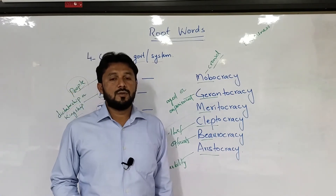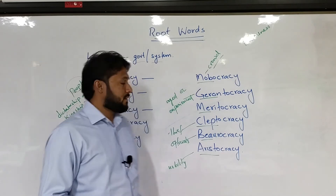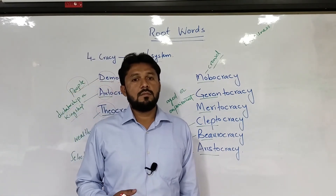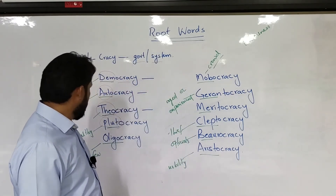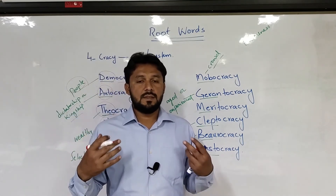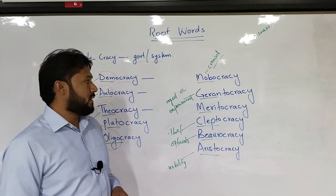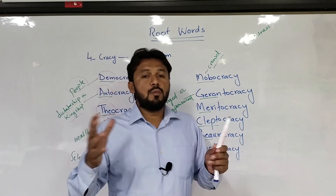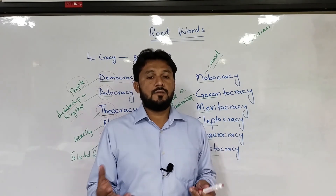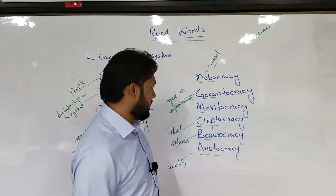'Theocracy' — 'theo' means religion, so theocracy means government run by religion or a religious person. 'Plutocracy' — 'pluto' means wealthy person, so government run by wealthy persons is known as plutocracy. 'Oligocracy' — 'oligo' means selected few people, so when some selected people are running the government, we call it oligocracy. 'Mobocracy' — 'mob' means crowd, so government by the crowd means lawlessness; if many people interfere in government affairs, there will be lawlessness.